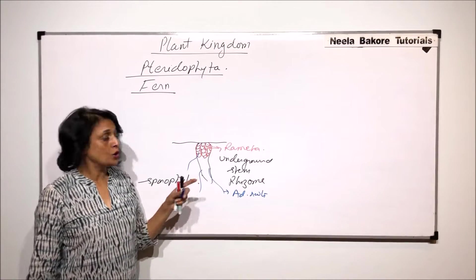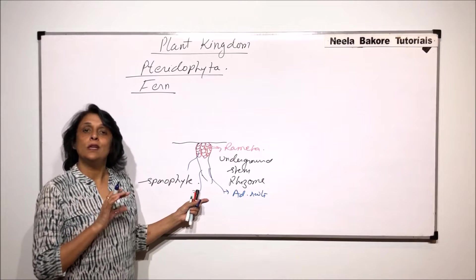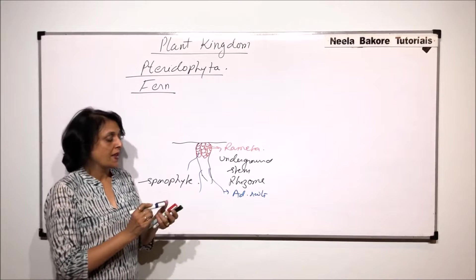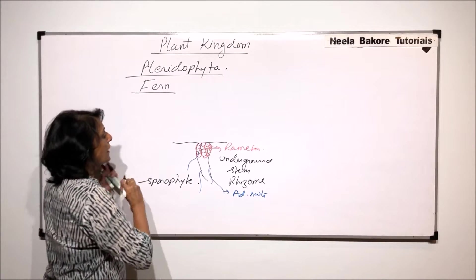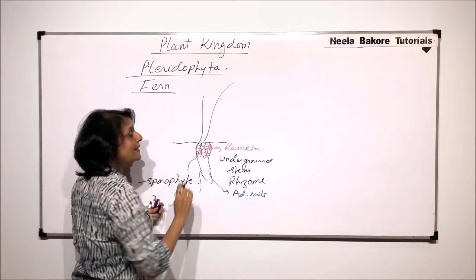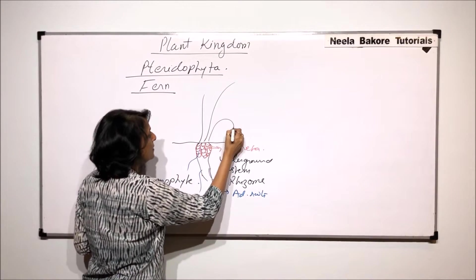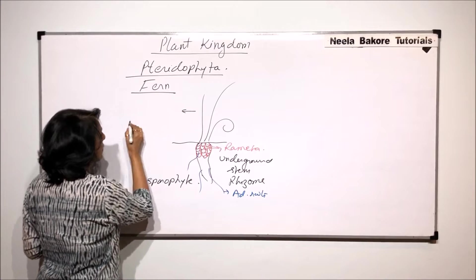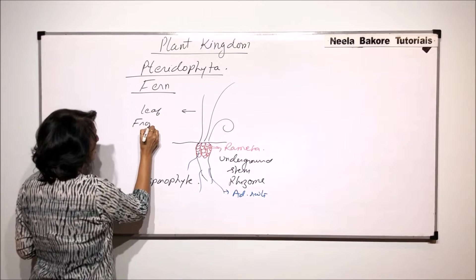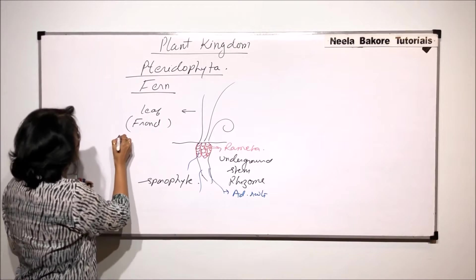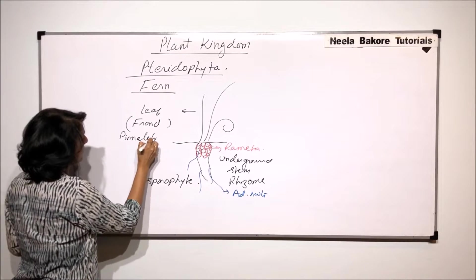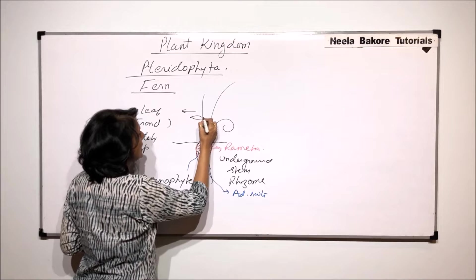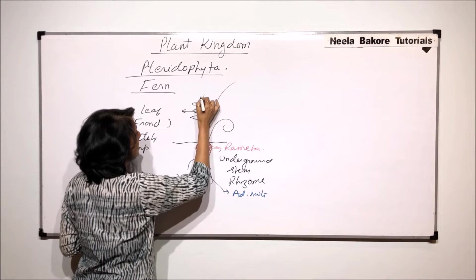The part of the sporophyte which is visible to us is only the leafy part. The stem is underground, and the roots are adventitious, arising from the underground stem. The upper visible part has long, large leaves — the younger leaves remain coiled. The leaves are known as fronds, and they are pinnately compound, and can be unipinnate or even bipinnate.